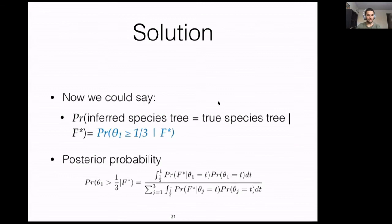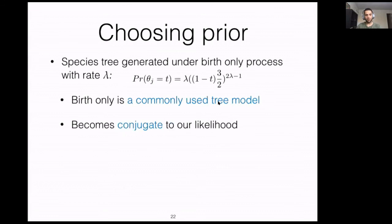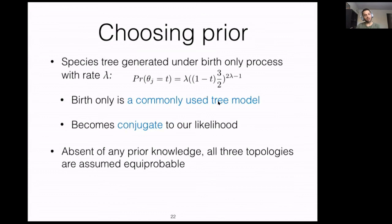The probability of the data can be computed by marginalizing over all three possible topologies. To compute this posterior probability, we need a well-behaved prior, and we used the Yule model. Based on this birth-only process, a commonly used tree model, the prior becomes conjugate to our likelihood, helping us compute the posterior probability analytically. In the absence of any prior knowledge, all three topologies are assumed equiprobable, so the probability of each θ greater than one-third is one-third.